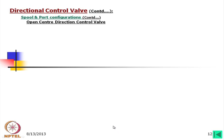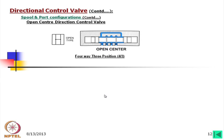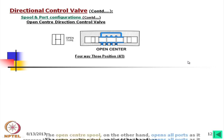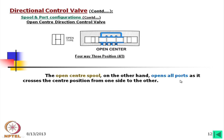Now for the open-center directional control valve: looking at the spool, this is the stem and these are the lands. The larger diameter sections are called lands and the smaller section is called the stem. The two middle lands are very thin, so all ports are kept open at center. If we move right or left, it operates the same as discussed for the closed-center case. The open-center spool opens all ports as it crosses the center position from one side to the other.